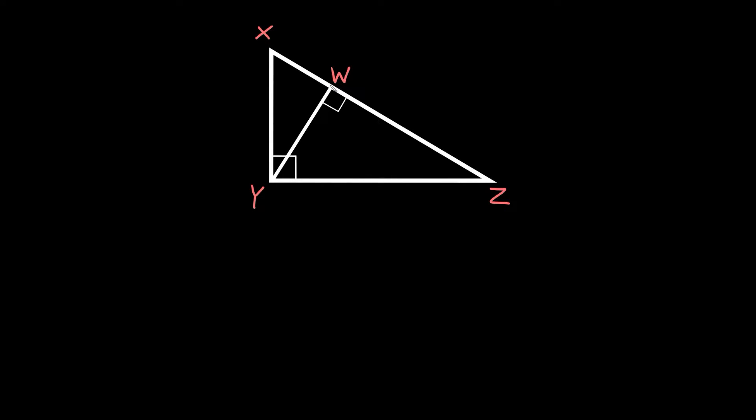Now when you draw an altitude that basically creates three similar triangles. All right so we have the first original big triangle XYZ. So let's just draw that guy for reference. We have this big triangle and it's a right triangle XYZ.